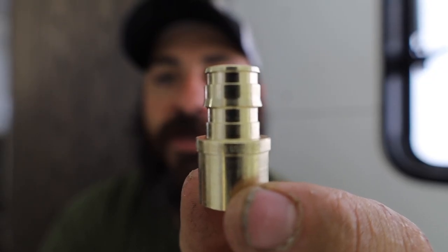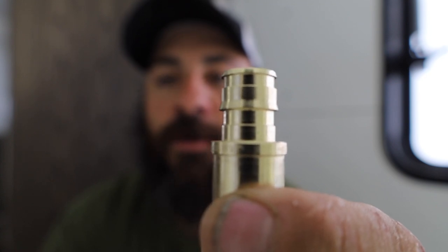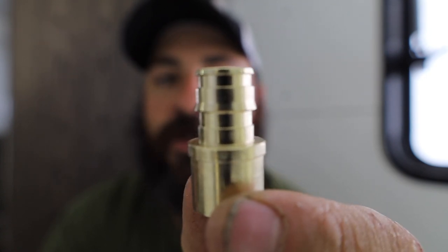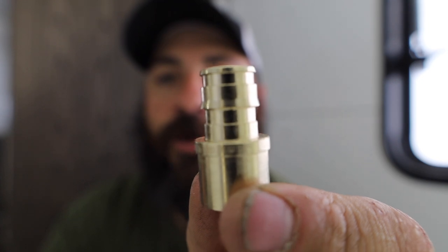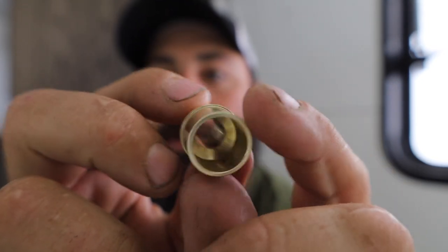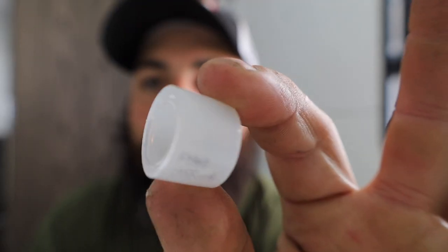So this is a brass Propex fitting and this is actually to go from Propex to a soldered connection. This is an expander ring.